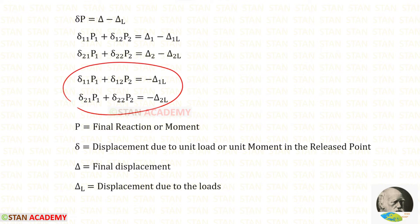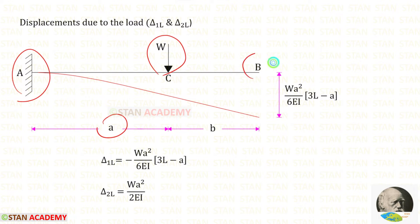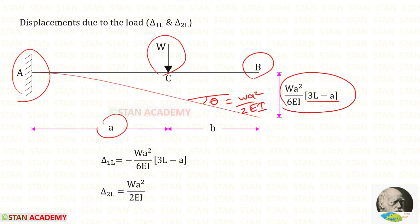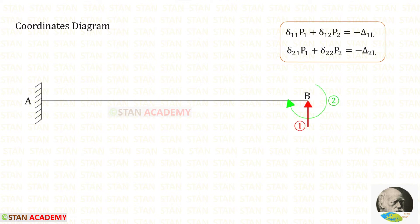In the two equations, let us find Delta 1L and Delta 2L. Delta 1L is the deflection due to the load and Delta 2L is the slope due to the load. For a cantilever beam with a point load at distance A from the fixed end, the deflection at the free end is WA²/(6EI) × (3L − A) and the slope is WA²/(2EI). Since the deflection occurs downwards it is negative, and the slope is positive.